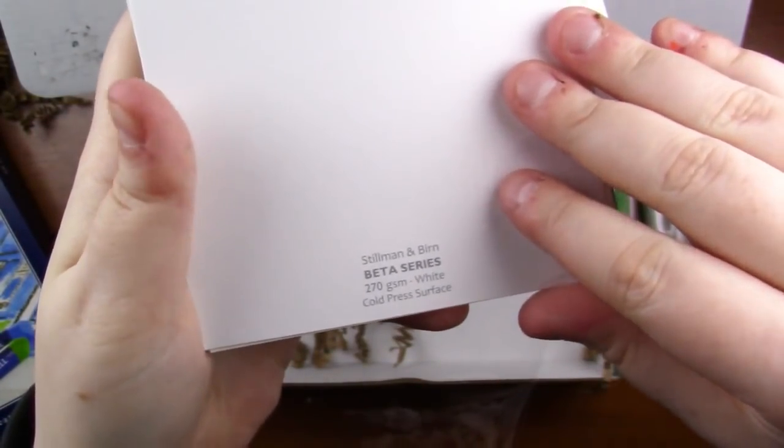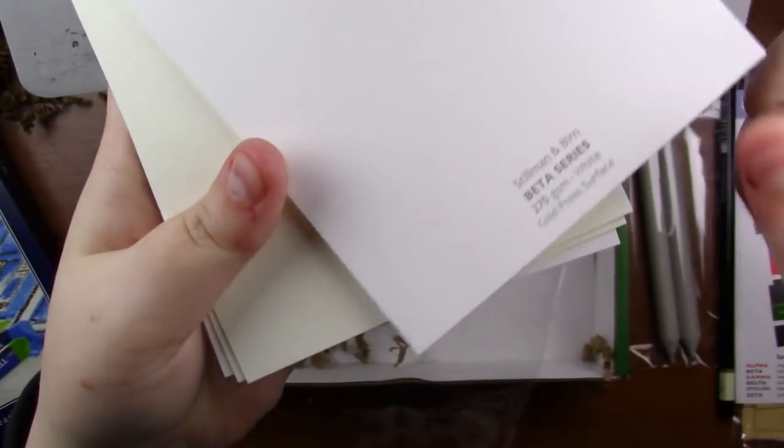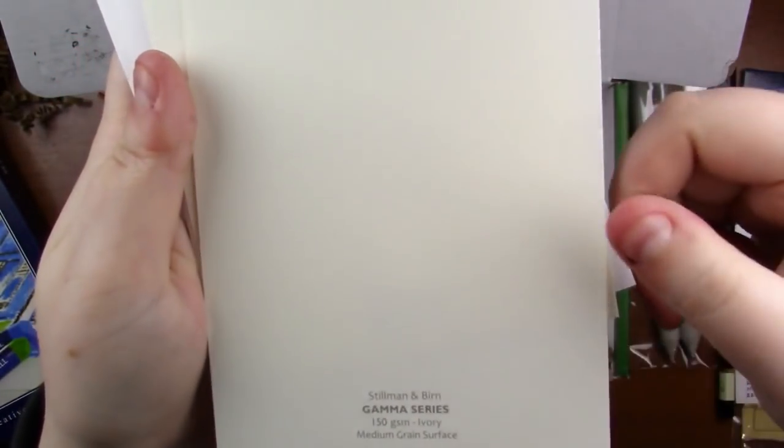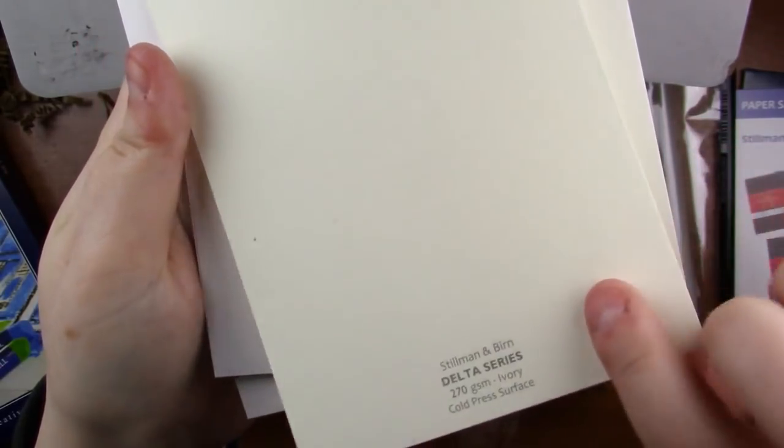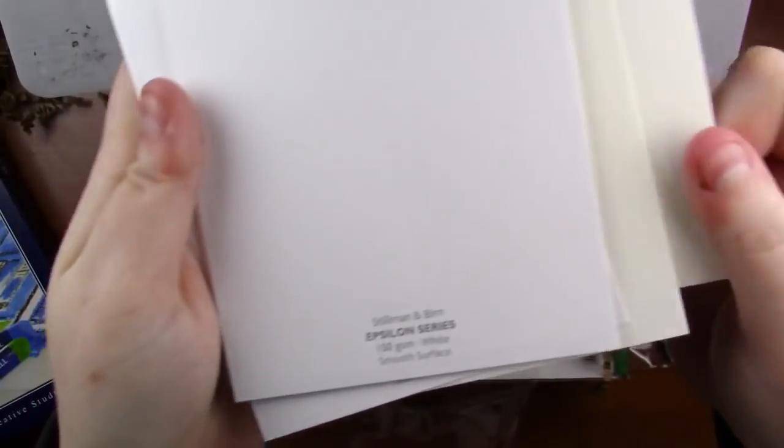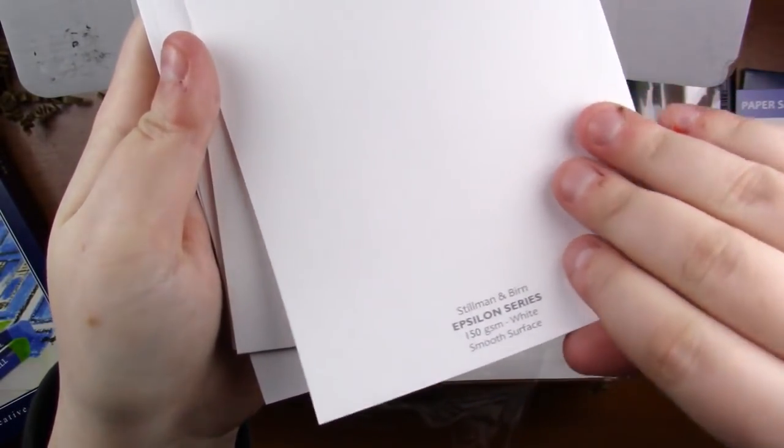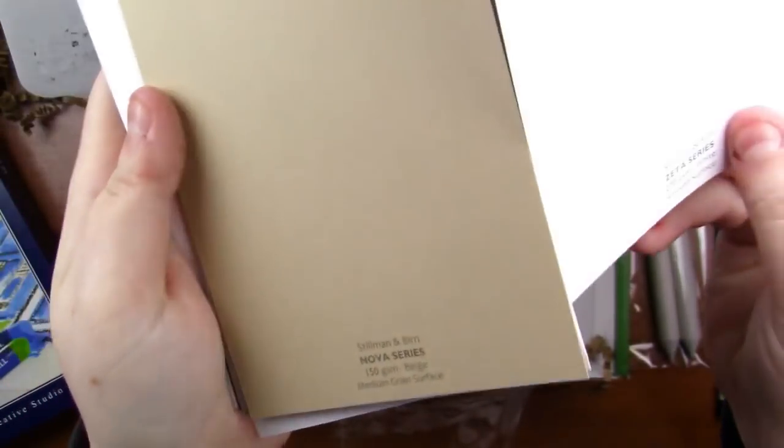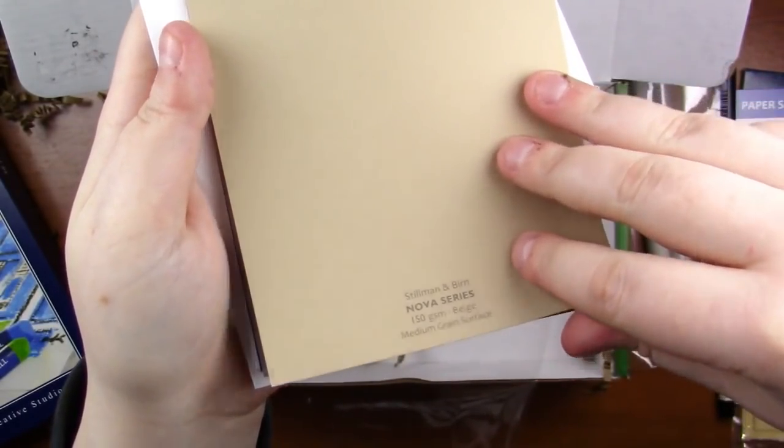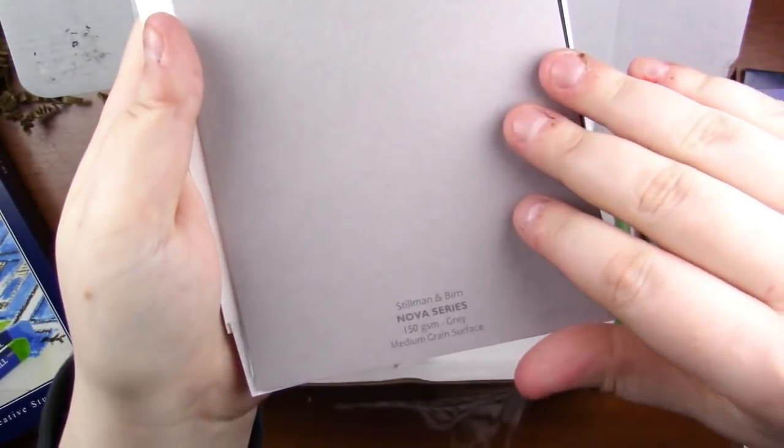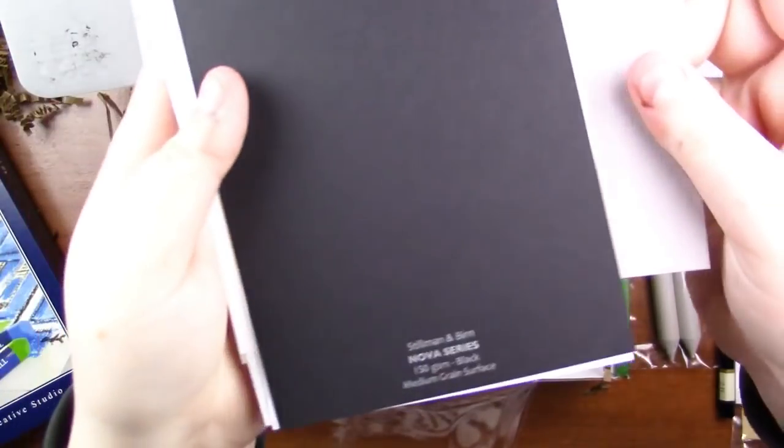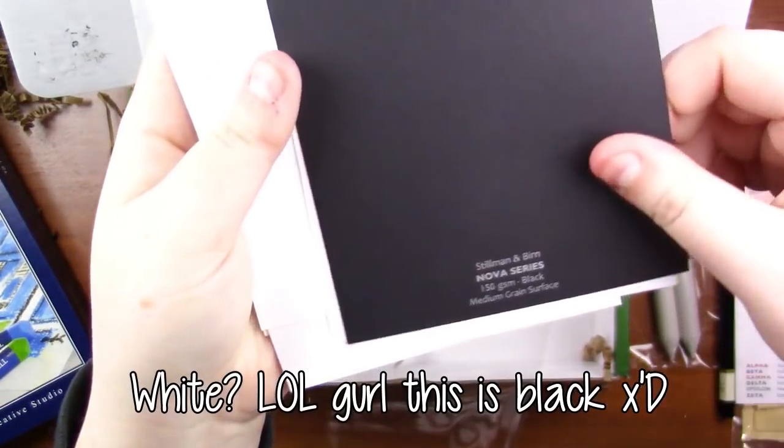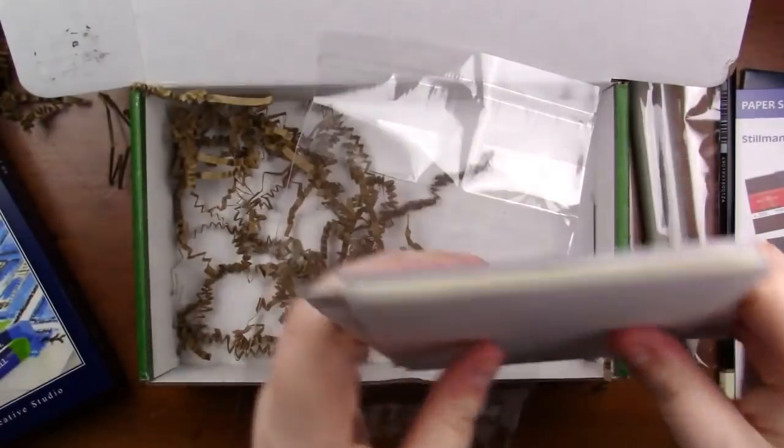So we've got an alpha series, a beta series, ooh this one's nice and thick, a gamma series which is like a really cool ivory color, delta series which is nice and thick and also ivory, epsilon series, zeta series, ooh we and then just talking about the stuff.